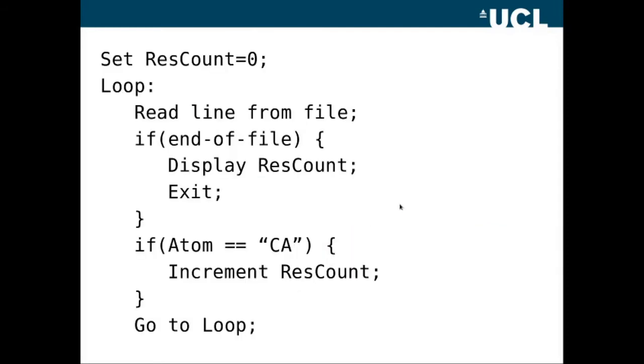This is another representation of the same thing, this time as pseudocode. Pseudocode is not real code, a computer won't understand it. It's really just another way of representing a flow chart. So here we're setting the ResCount to zero. We're starting a loop, reading a line from the file. If it's the end of the file, we will display the ResCount result and exit. If it isn't, then we test if it's a C-A, and if it is, we increment ResCount. And then we go to the loop and carry on looping.